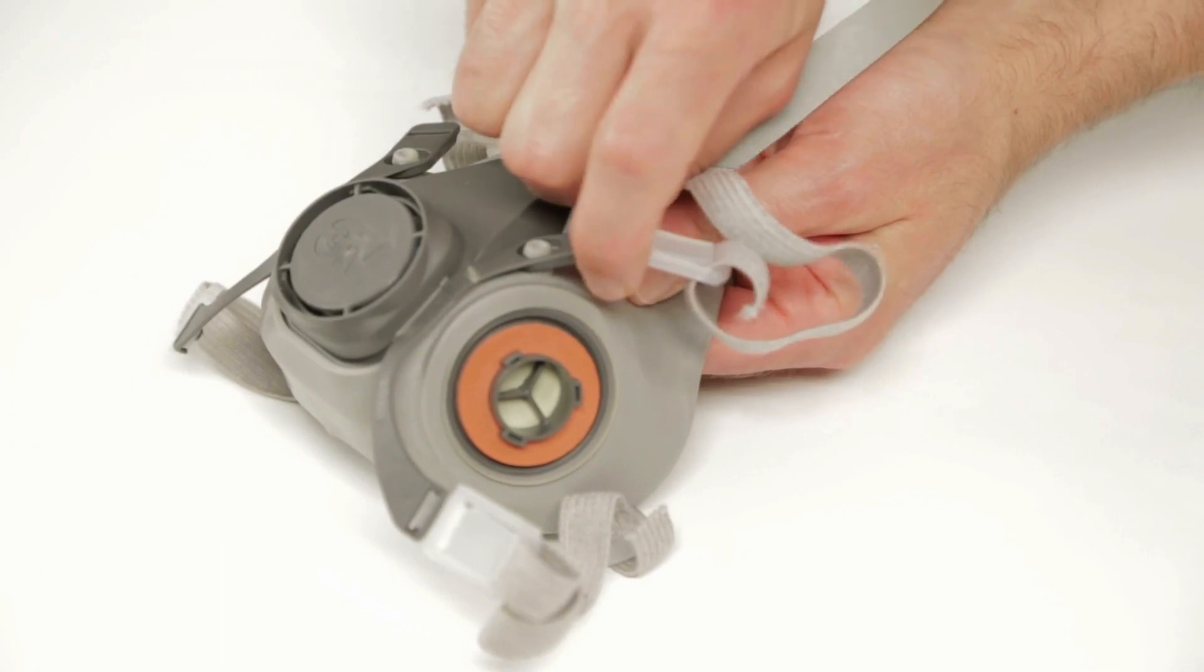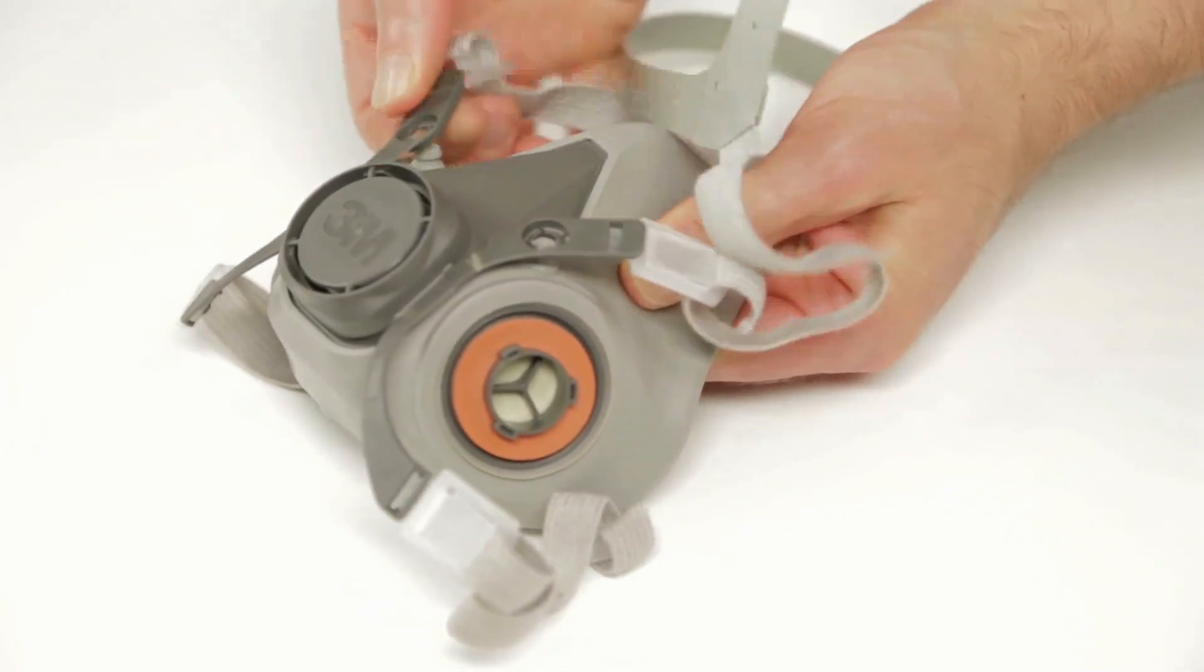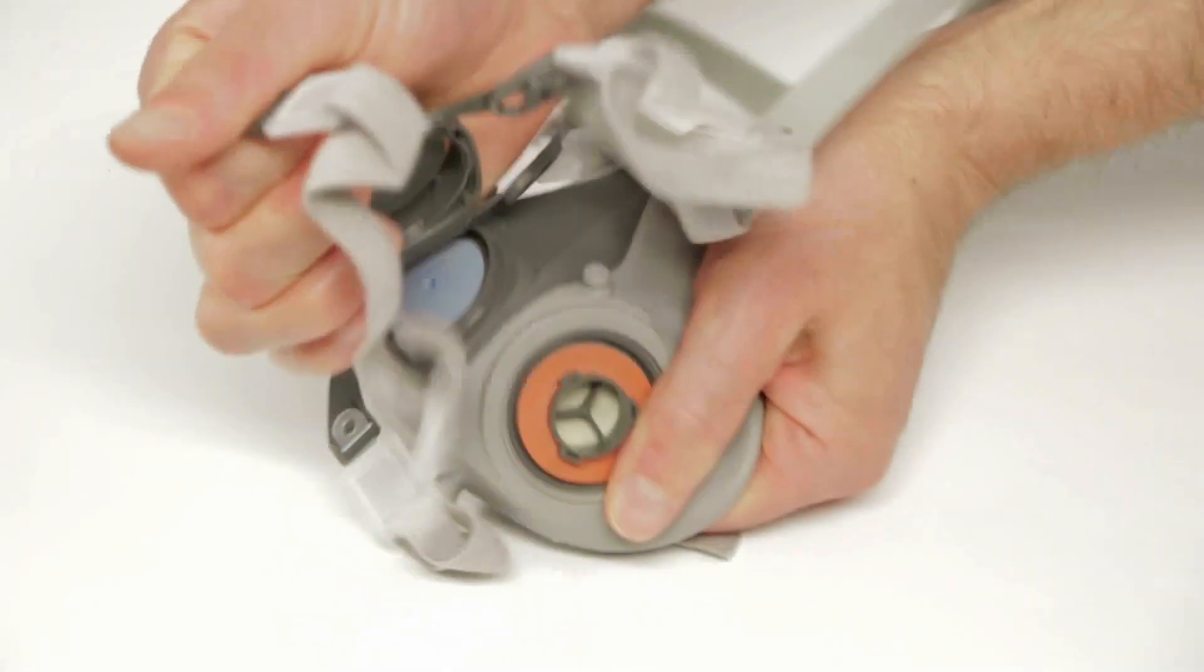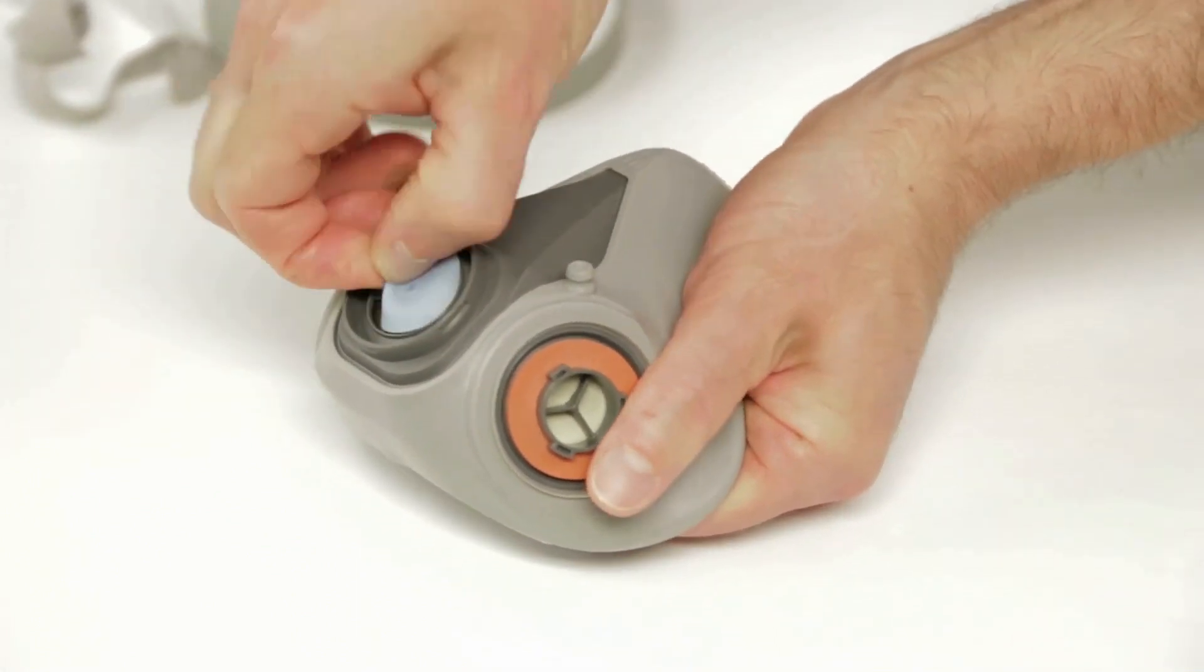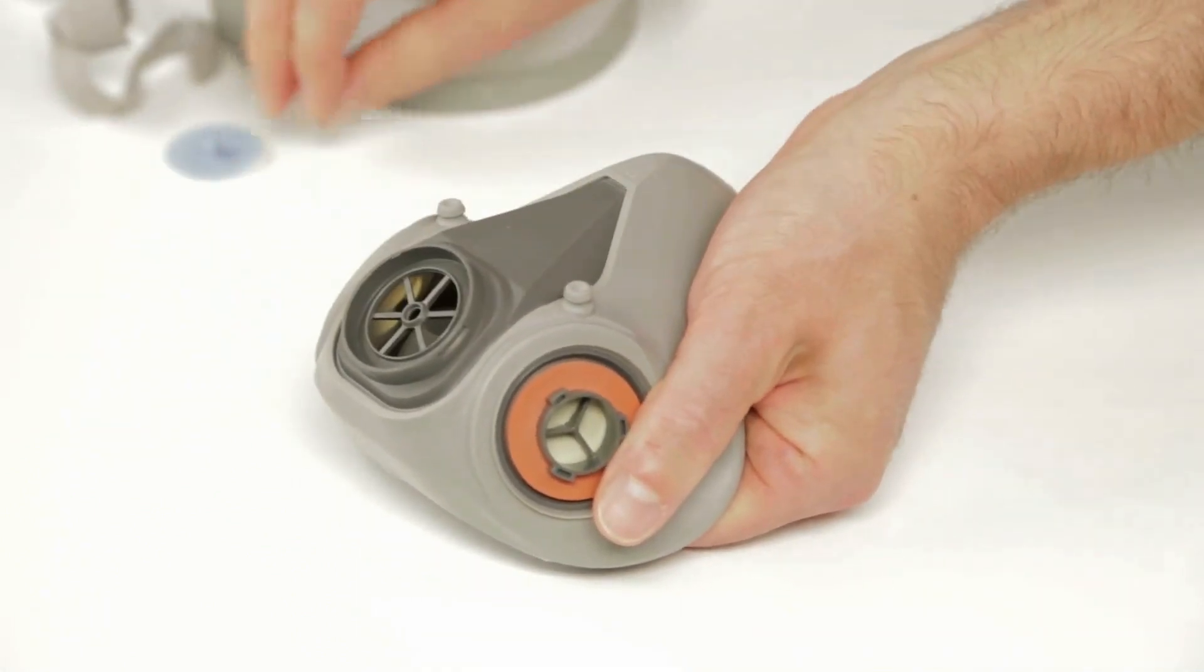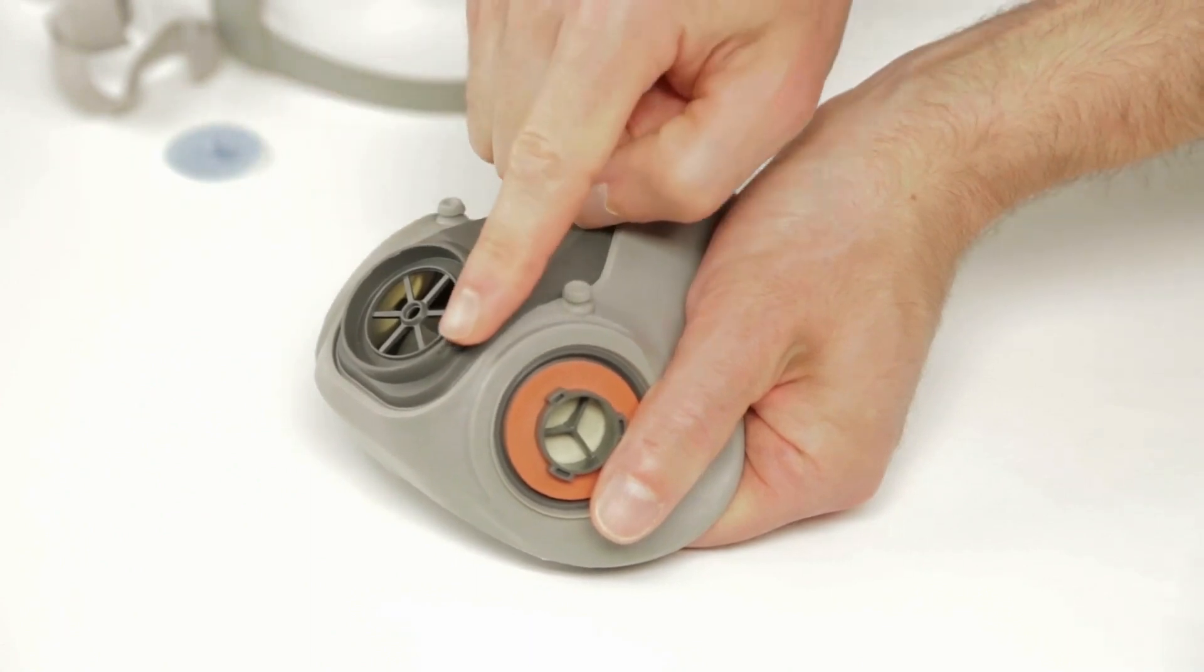To remove an existing exhalation valve, remove the respirator strap assembly as you did before. Grasp the valve and pull it off the center post. Inspect the valve seat to make certain it is clean and in good condition.